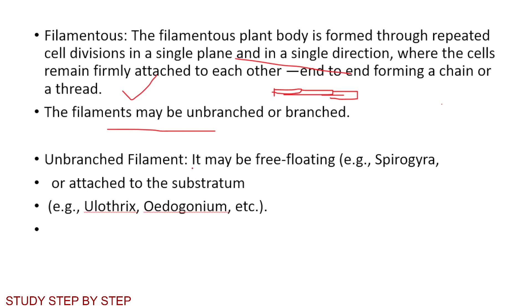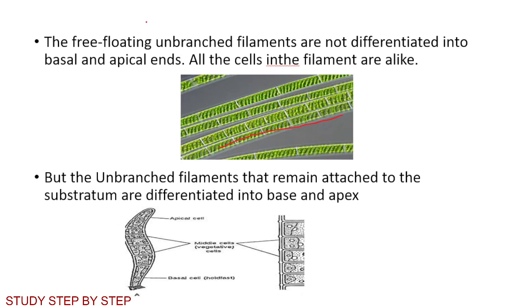Unbranched filaments may be free-floating or attached to the substratum. If free-floating, example: Spirogyra. If attached to substratum, examples: Ulothrix and Oedogonium. In the case of free-floating unbranched filaments, the filaments are not differentiated into basal and apical ends — all cells in the filament are alike.